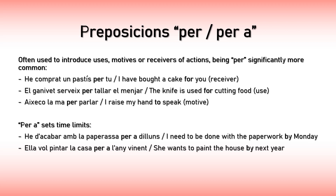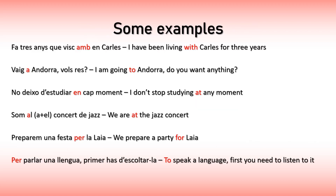Here are some example sentences, each with a different highlighted preposition. 'Fa tres anys que visc amb en Carles' — 'I have been living with Carles for three years' — an easy translation, you just say AMB. 'Vaig a Andorra. Vols res?' — 'I am going to Andorra. Do you want anything?' There is movement, it's a dynamic situation, so you use the preposition A. 'No deixo d'estudiar en cap moment' — 'I don't stop studying at any moment.' 'Cap moment' — any moment — is a concept, something abstract, so you use the preposition EN.